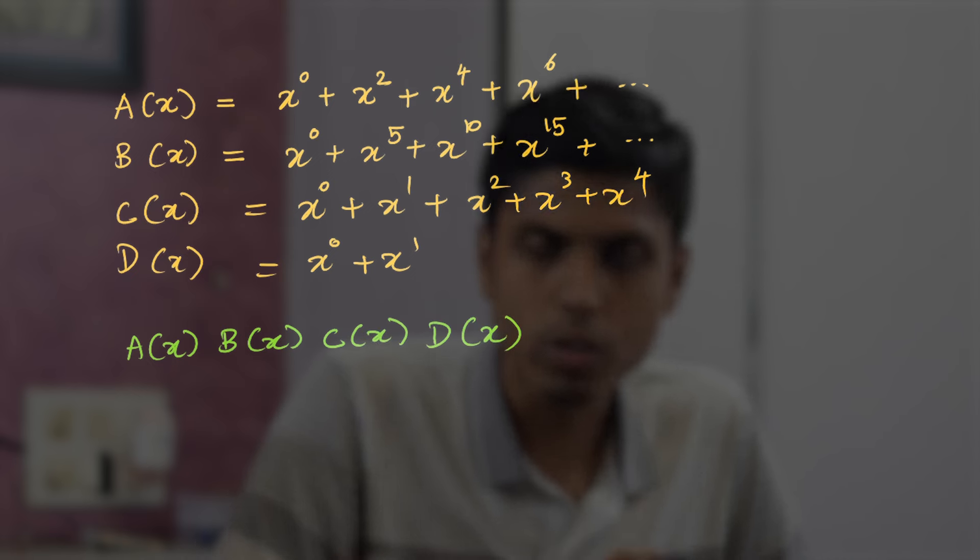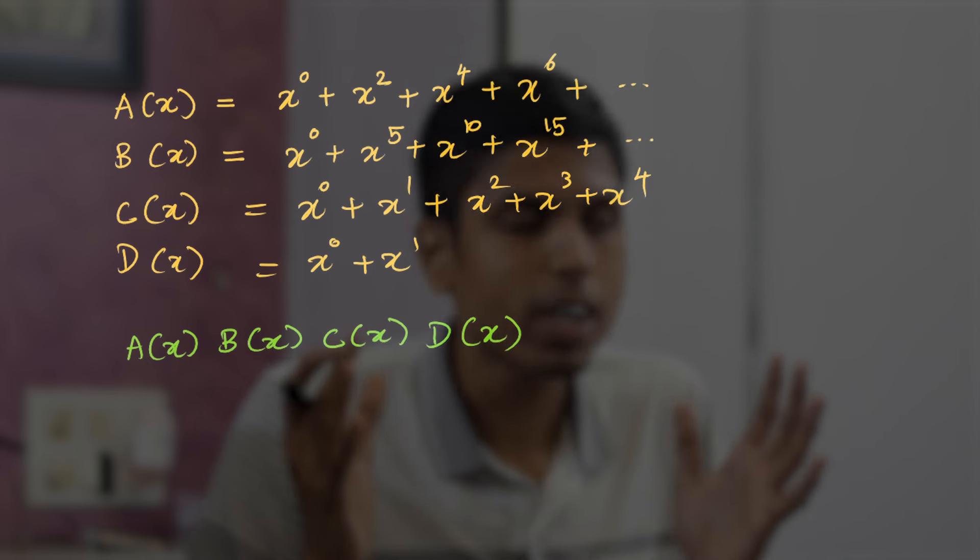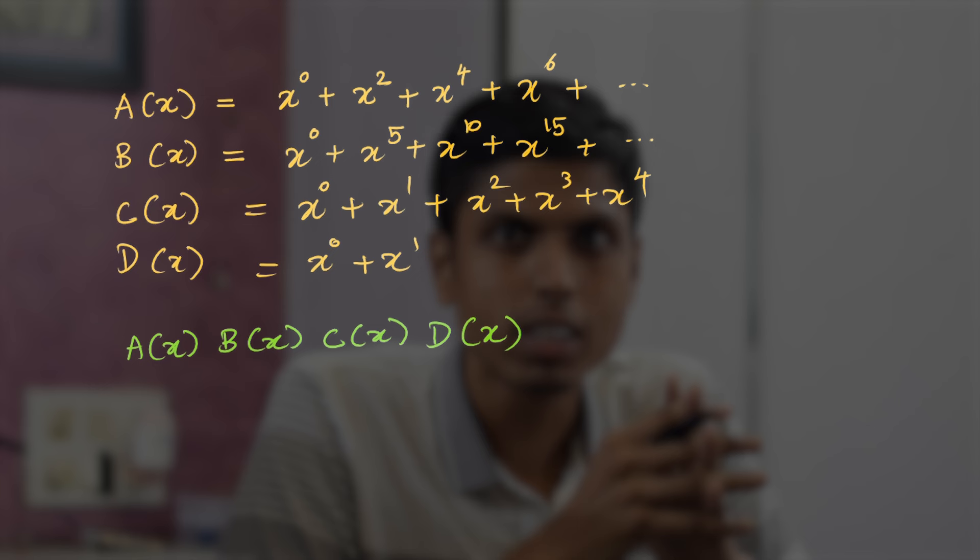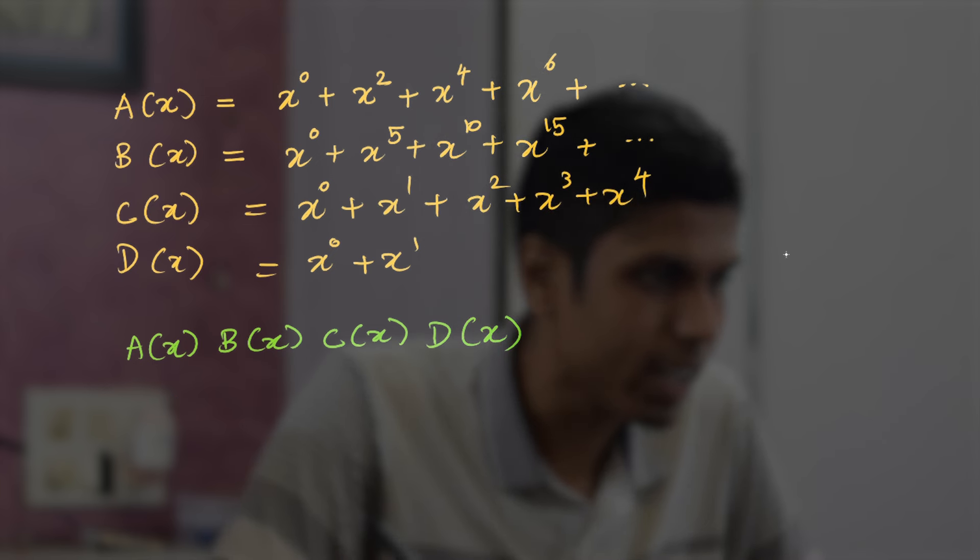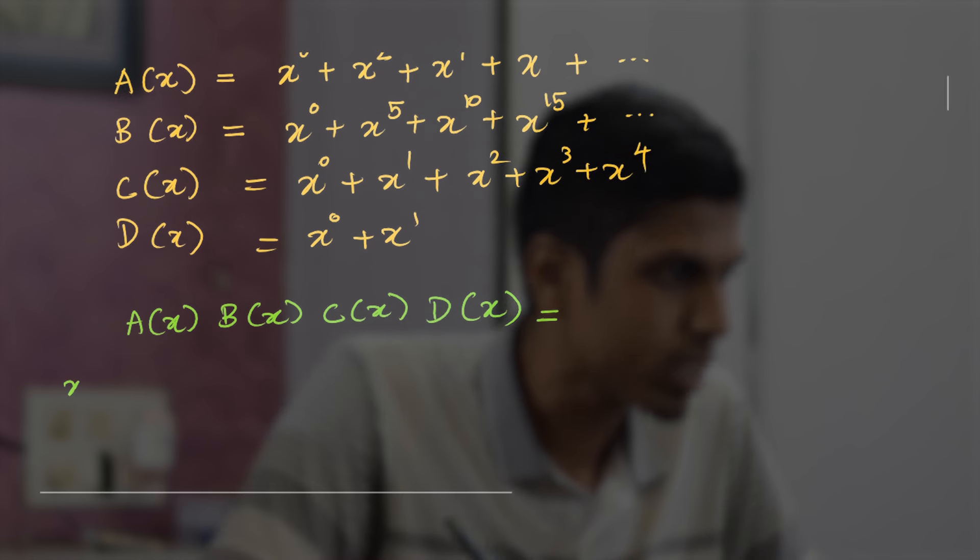And if you consider the product of all these formal power series, it has some significance in counting, and that's where algebra and combinatorics combine together and solve the problem.